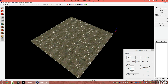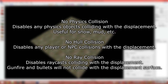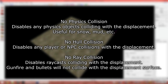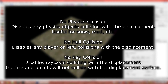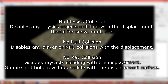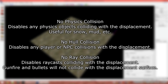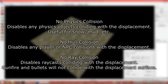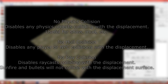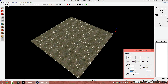There's also no physics, hull, and ray collision options. Ray is lighting. Hull is for physics props and stuff like that — useful for mud and snow. And physics is physics collision — players walking on it and so on. We also have elevation and scale, which we'll play with a little bit later.